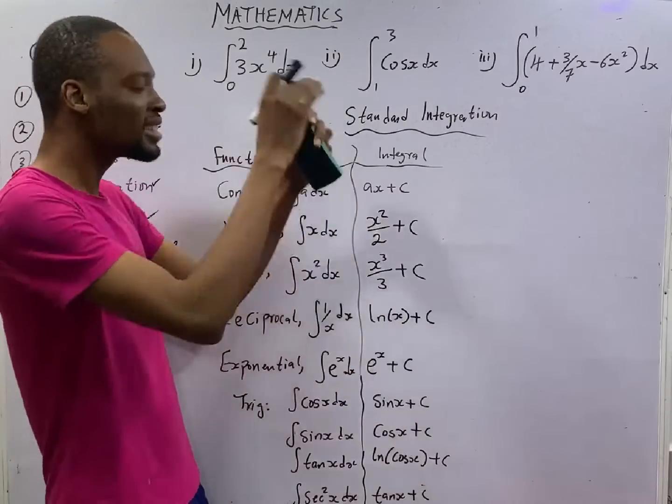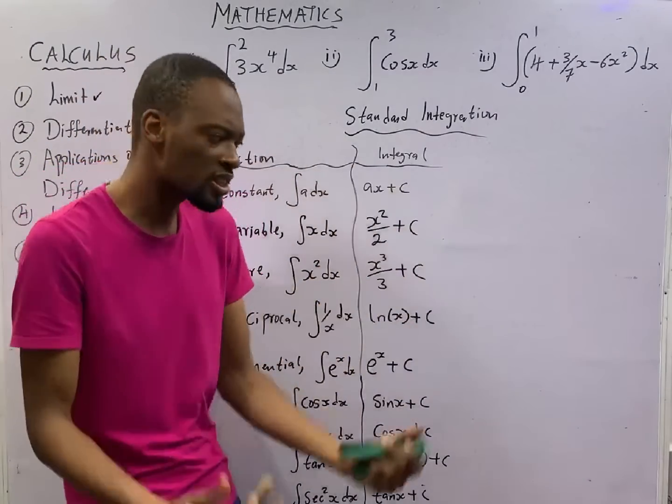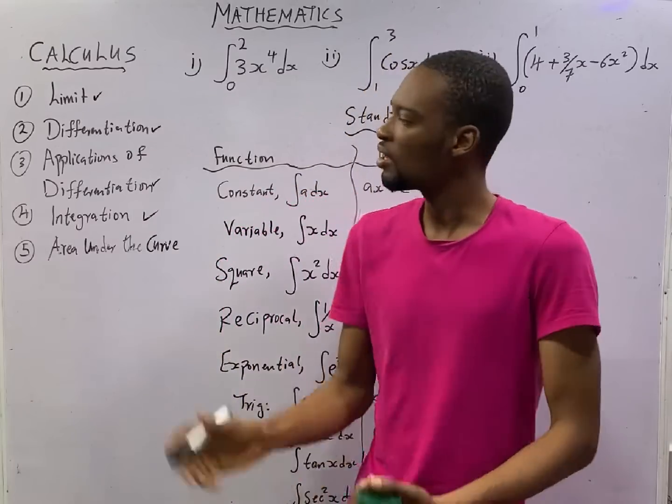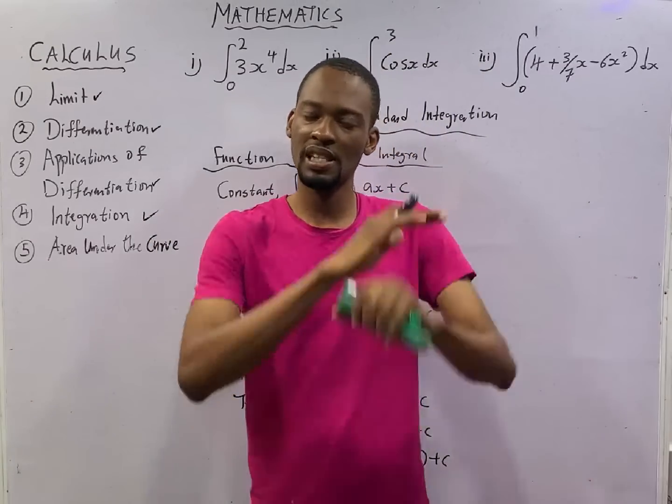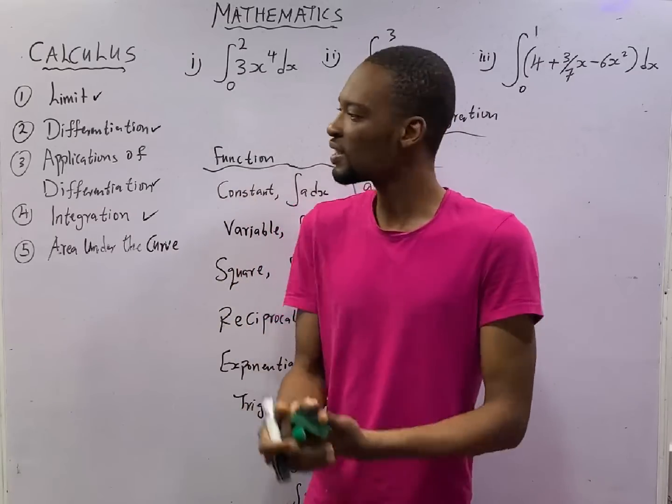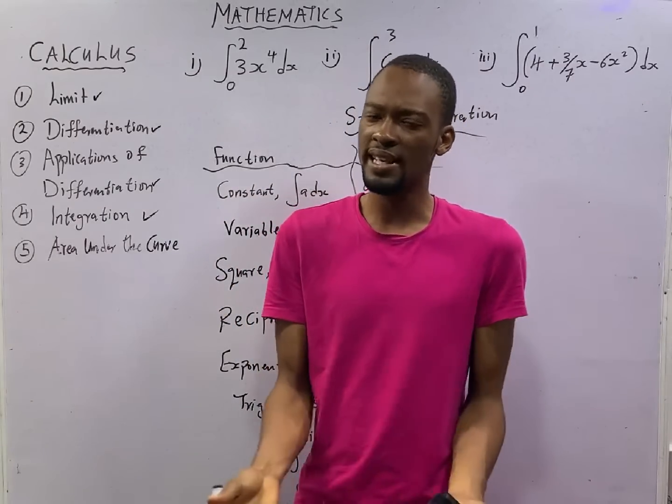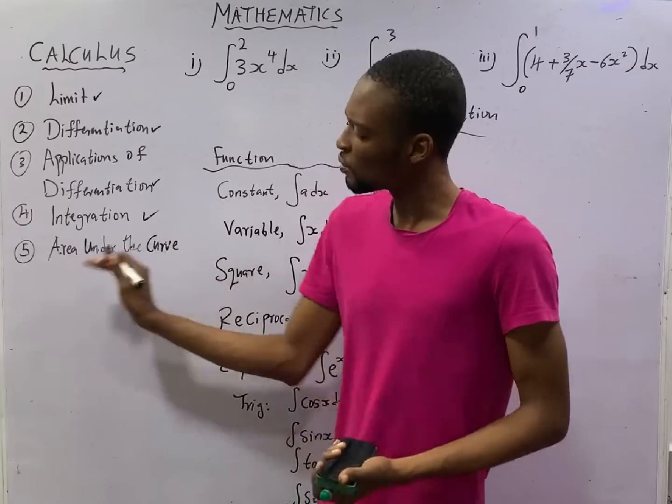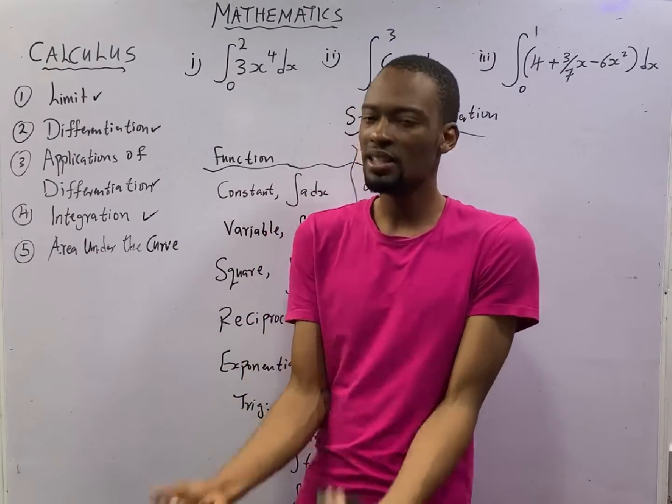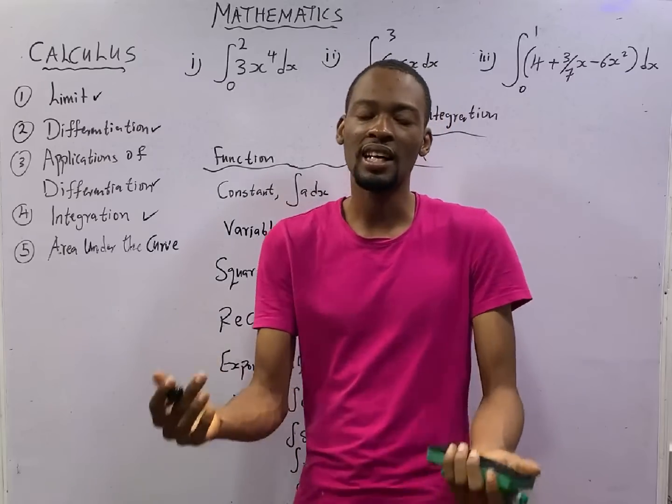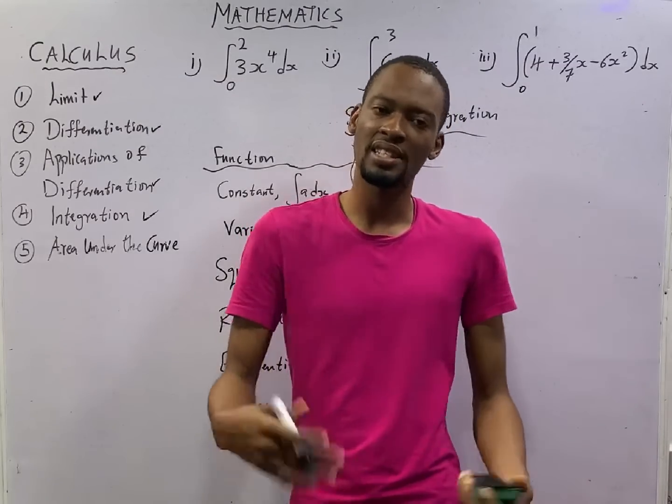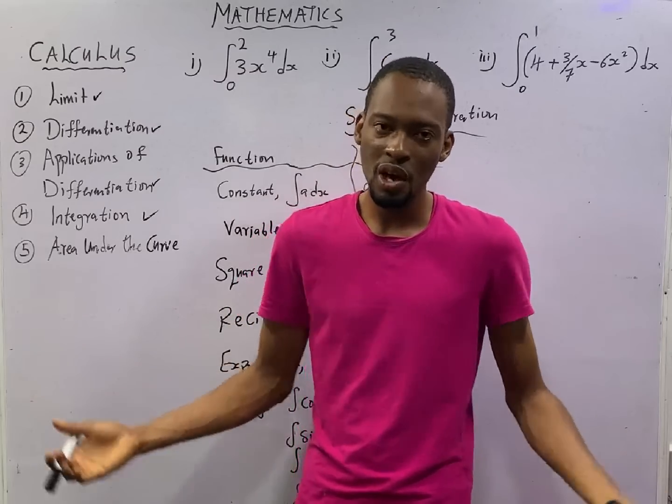You must know that when you integrate this, you will get this. Just like for differentiation, I give you standard differentials. Like, when you differentiate a constant, you get 0. When you differentiate s, you get 1. When you differentiate s squared, you get 2s. Meaning, use the power to multiply the function, subtract 1 from the power. And I said, when you differentiate sin theta, you get cos theta, and so on.